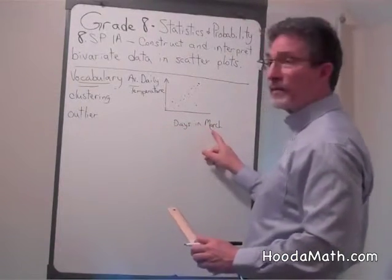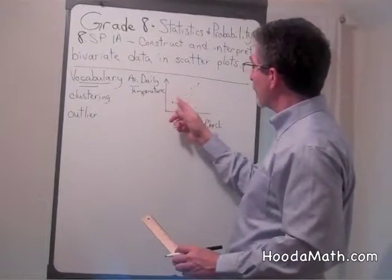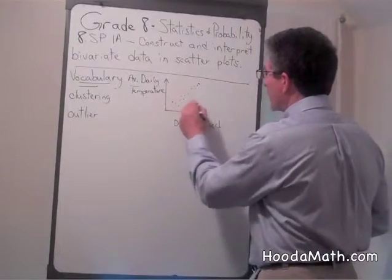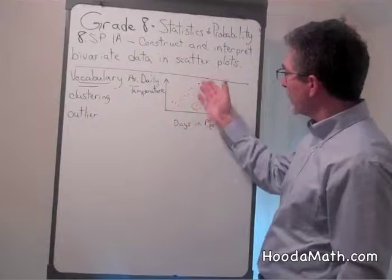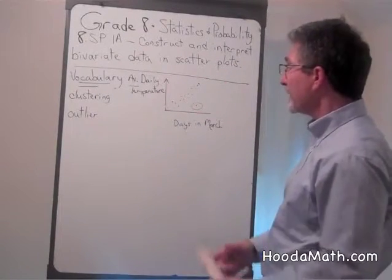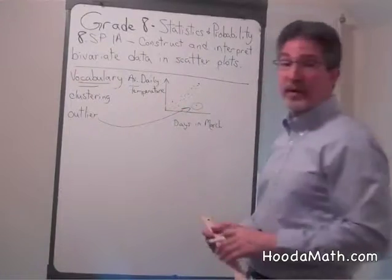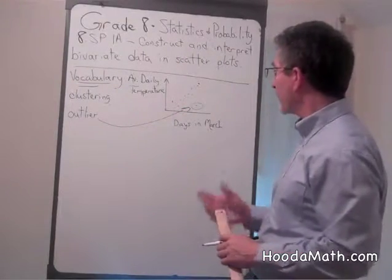As the days go on in March, the average daily temperature rises. This point here is out of the ordinary. It's not going up, it went way down, and that would be considered an outlier or an unusual occurrence during the month of March.